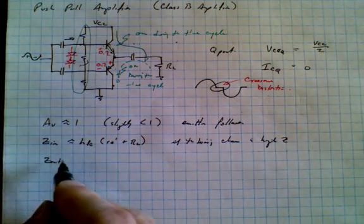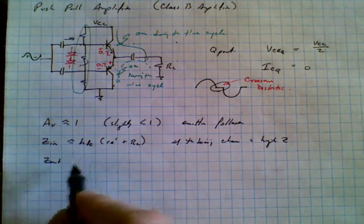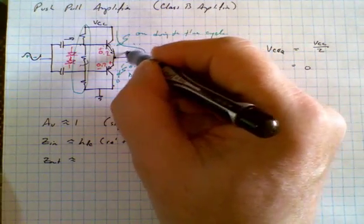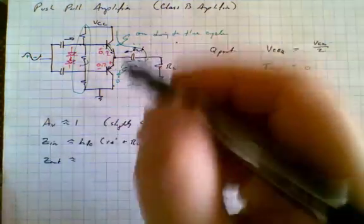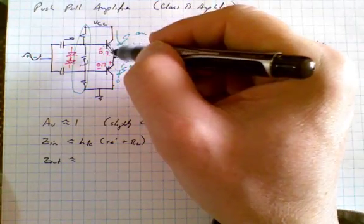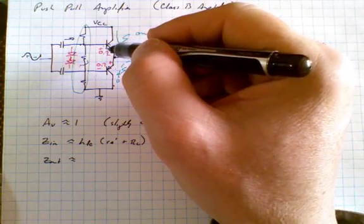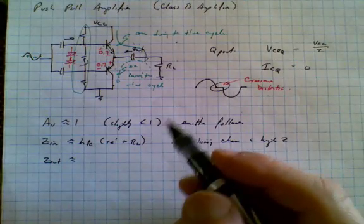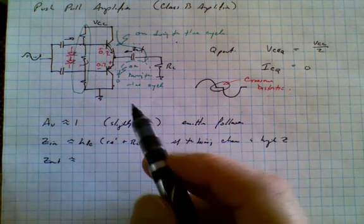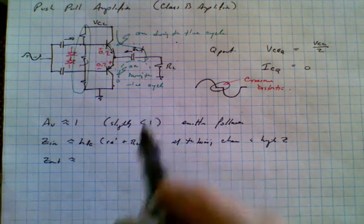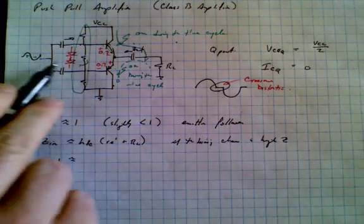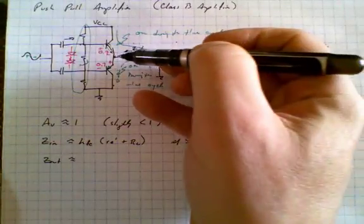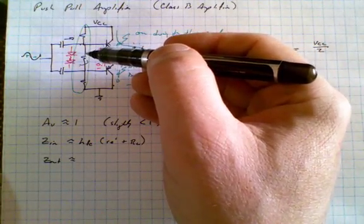Zout is, by now hopefully, we could see by inspection, looking into here. Zout could be looking backward through this resistor, RE prime, plus whatever it sees on the other side. And in this case, of course, we may see those resistances because they're going to be divided by HFE. Remember, as we look into the transistor this way, the impedances get magnified by beta or HFE, whereas if we look into the circuit this way, they get divided by the beta or the HFE.